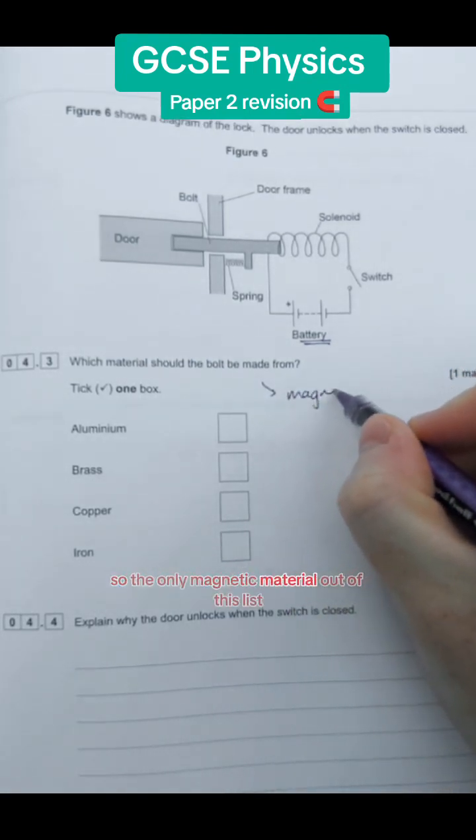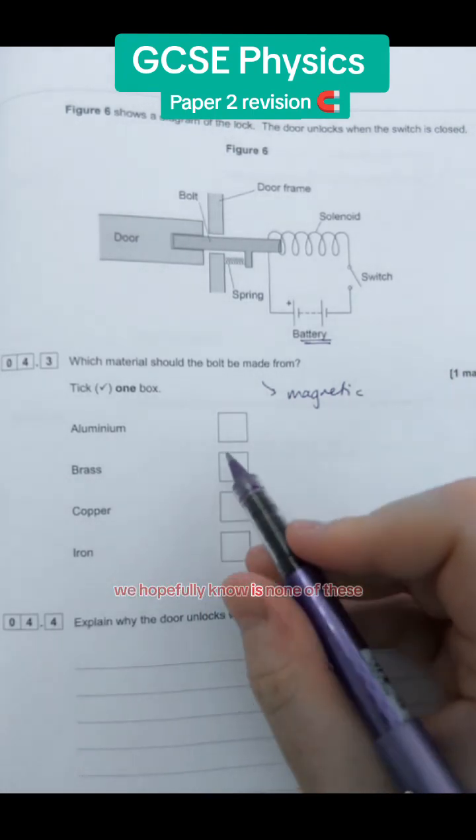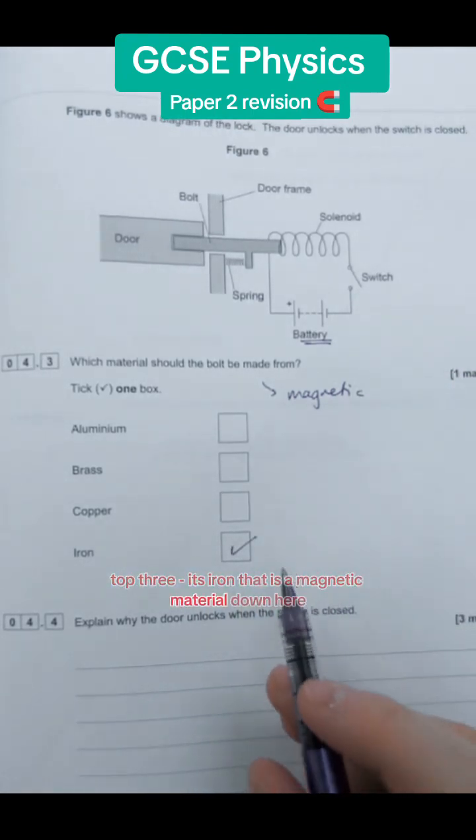For the only magnetic material out of this list we hopefully know is none of these top three. It is iron. That is the magnetic material down here.